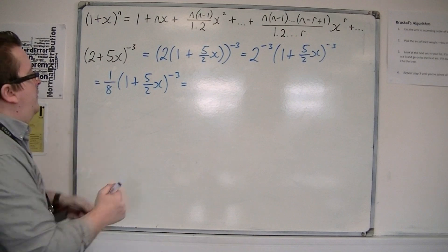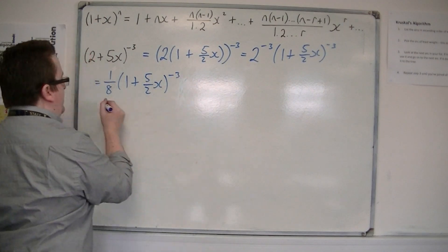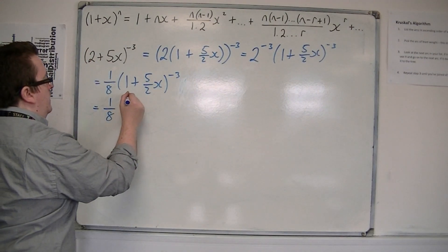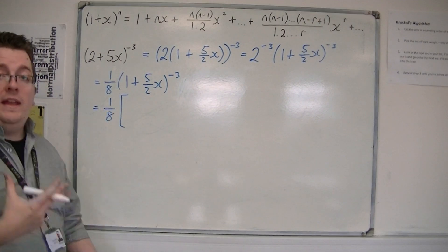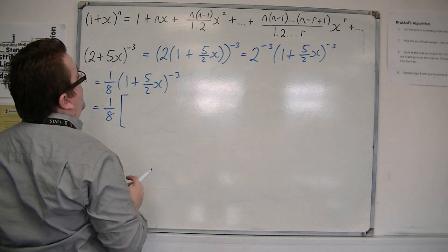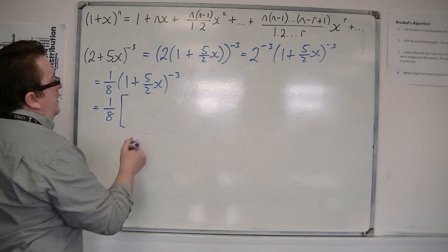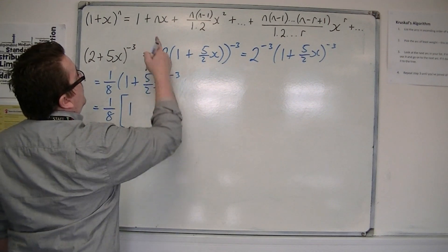So now I can expand, I'll write it down here, the (1 + 5/2 x) to the minus 3 using the formula that's in the formula booklet. So we have 1 plus n,